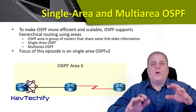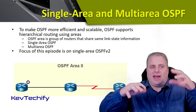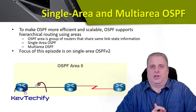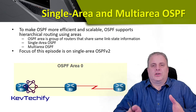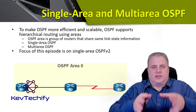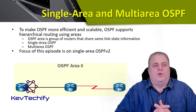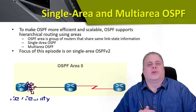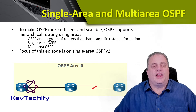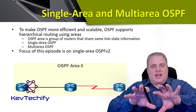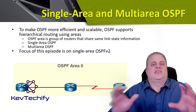To make OSPF more efficient and scalable, OSPF supports a hierarchical routing structure. We can set up certain routers that share the same link state database and have them communicate just with each other. If you have a smaller network, you can have all of your devices in a single OSPF area, where all those routers share that link state database.